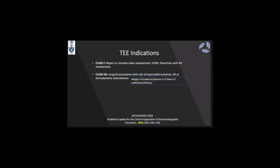As a Class 2A indication, which means the weight of evidence and opinion is in favour of use and effectiveness, is any surgical procedure with a risk of myocardial ischemia, MI, or hemodynamic disturbances. The big debate came up with the Class 2B indication, which means usefulness and efficacy is less well established — this is the situation for off-pump coronary bypass for evaluation of regional myocardial function, or evaluation of coronary anatomy or graft patency.